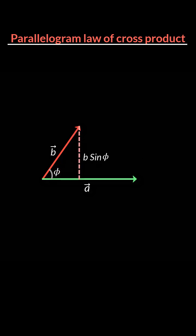b sin φ is the magnitude of the component of vector b perpendicular to the direction of vector a. If you multiply this with the magnitude of vector a, what you get is the magnitude of a cross b.